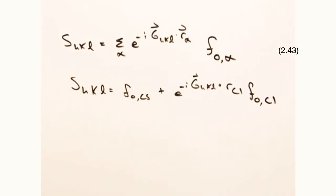Like the simple cubic case, the cesium atom would result in a structure factor of f_naught_cesium for all hkl.